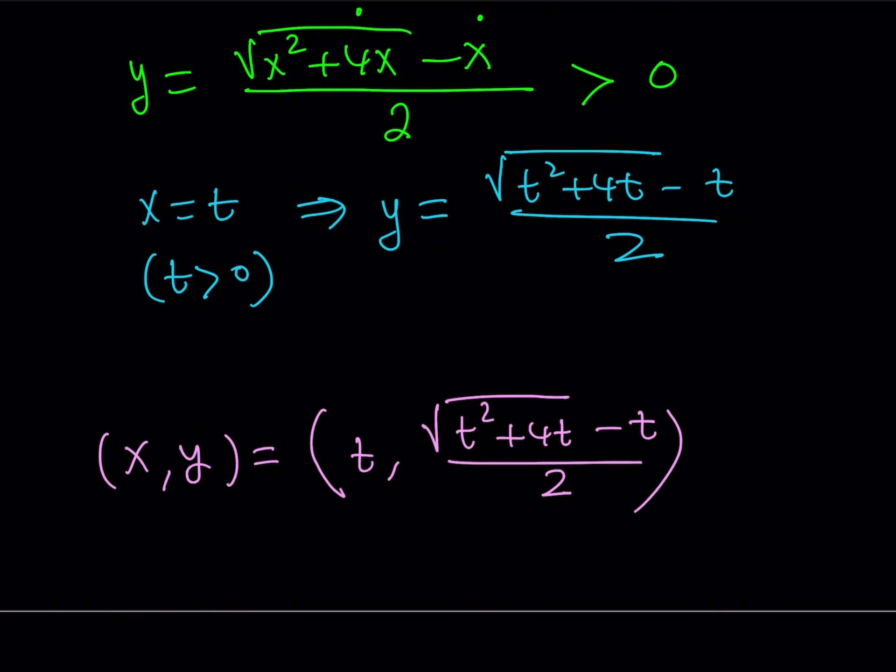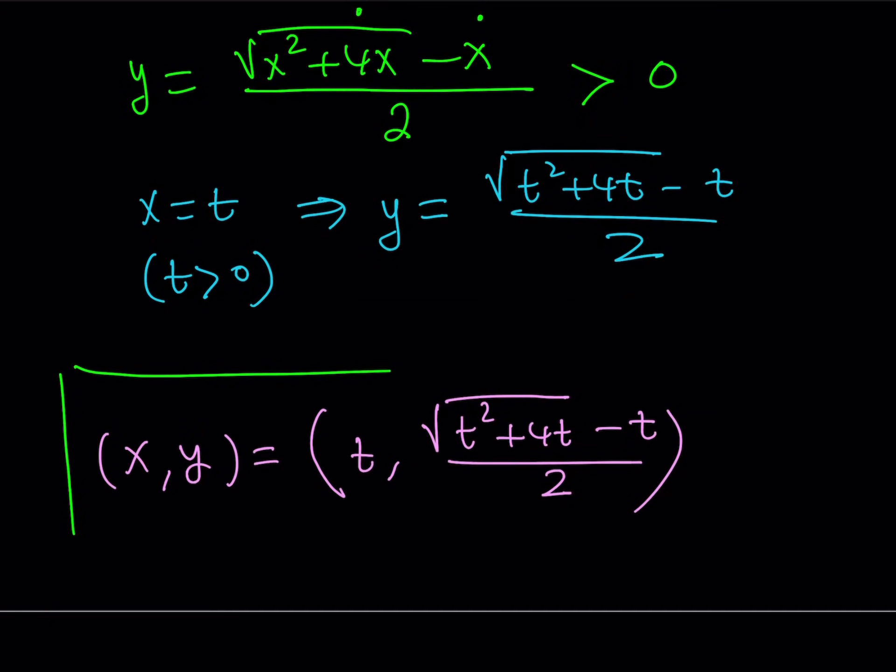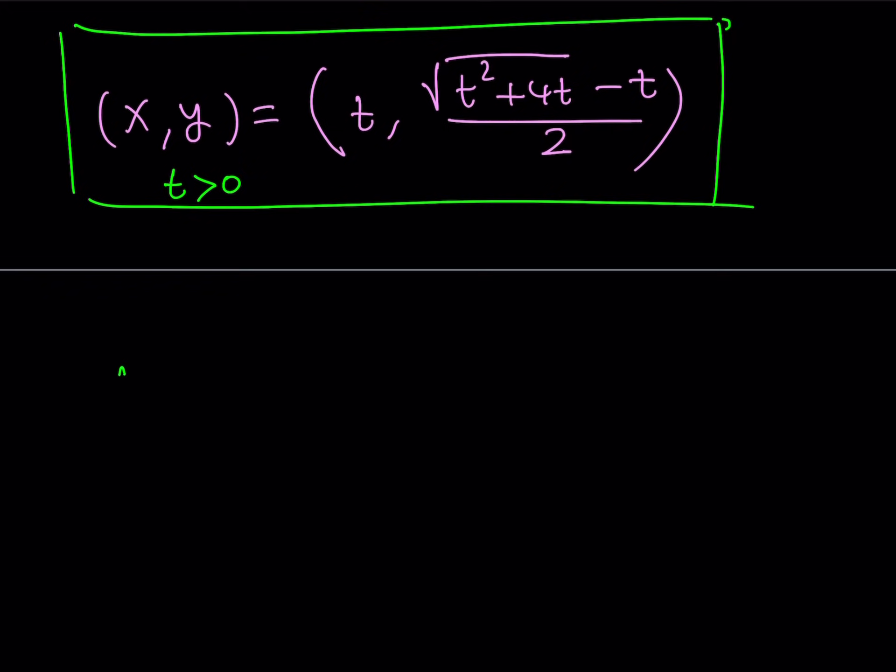And this basically gives you all the solutions in parametric form, which means that for different values of t, you're going to get different solutions. Of course, t has to be positive. Let's not forget that. Okay? All right. Now, what is this supposed to mean? Let's talk a little bit about this expression here. For example, if t is equal to 1, then you're going to plug in t equals 1 everywhere. And this is going to give you 1 comma square root of 5 minus 1 over 2. And as you know, this is somewhat a special value, right? Hopefully, you've seen that before.